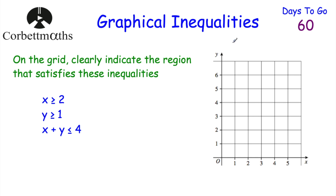Here's our first question. On the grid, clearly indicate the region that satisfies these inequalities. We've got three inequalities: x is greater than or equal to 2, y is greater than or equal to 1, and x plus y is less than or equal to 4. What we're going to do is draw them. So we've got x ≥ 2, so we're going to draw the graph of x equals 2 on this grid.